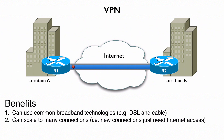Of course, that main site that we're connecting into, whatever we're using as a VPN concentrator there — maybe a Cisco ASA, an adaptive security appliance, maybe a Cisco router — it has to have capacity to handle all of these incoming VPN sessions.